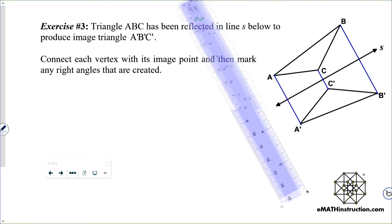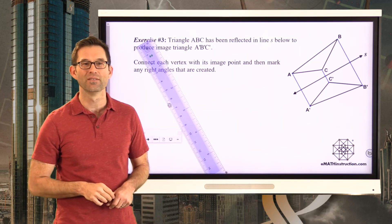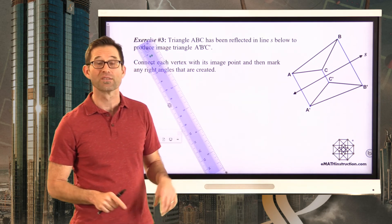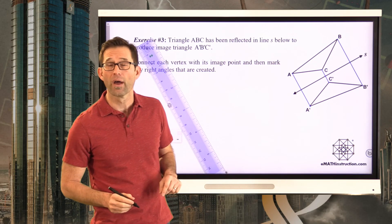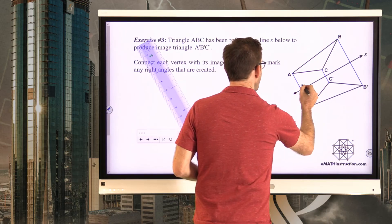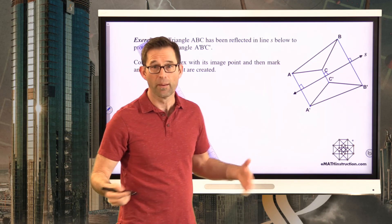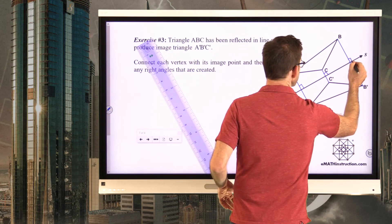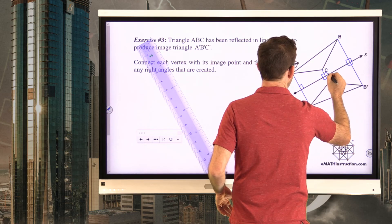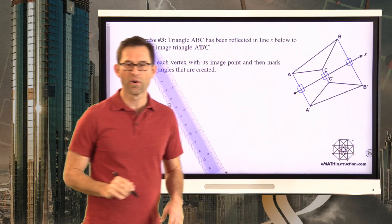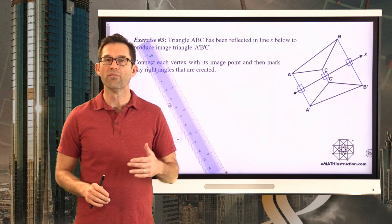This creates a cool picture with several shapes including some pretty trapezoids. The problem also asks us to mark right angles — there's a right angle where each connecting segment meets line S. Once you have one right angle there, all of them must be right angles. The perpendicular bisector property of the line of reflection is a very important idea.